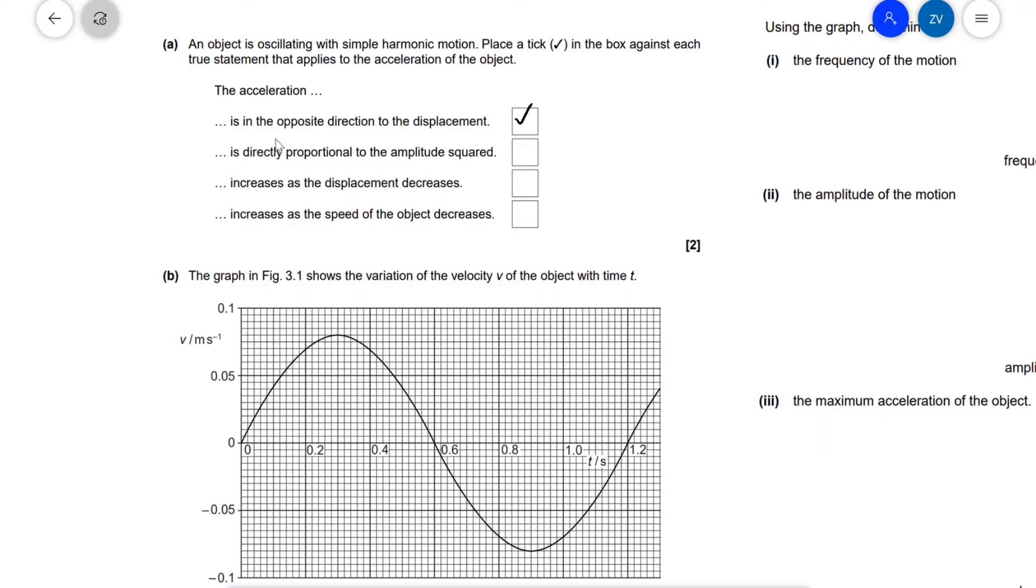Okay, the acceleration is directly proportional to the amplitude squared. No that is definitely not true and we know that because the acceleration is actually proportional to the displacement not the amplitude, with this being the defining equation of simple harmonic motion.